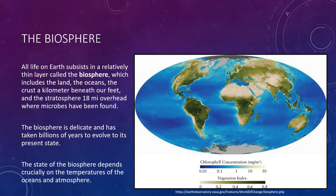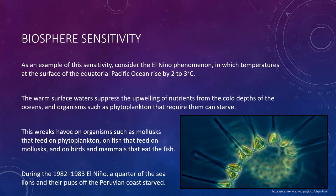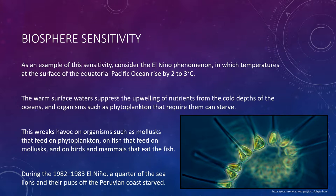An example of this sensitivity that recurs every three to seven years is the El Niño phenomenon, in which temperatures at the surface of the equatorial Pacific Ocean rise by about two to three degrees. Ordinarily, water from the cold depths of the ocean wells upward, bringing nutrients used by microscopic marine organisms called phytoplankton that live near the surface. But during El Niño, warm surface water suppresses this upwelling and the phytoplankton can starve, wreaking havoc on mollusks that feed on phytoplankton, the fish that feed on mollusks, and the birds and mammals that eat those fish. During the 1982 to 1983 El Niño, one quarter of adult sea lions off the Peruvian coast starved along with all their pups.